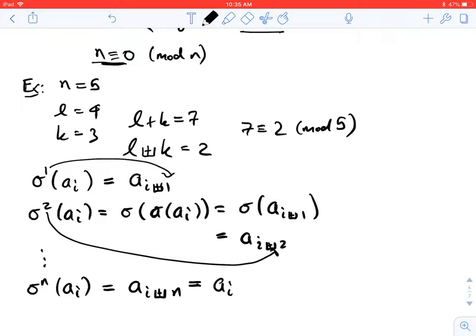So in fact, applying sigma to the n to a sub i gives us a sub i. And so sigma to the n must be the identity, right? Because this was for all i. We didn't put a restriction on it. All right. And that was our goal. Our goal was to show that if you had an n cycle, then when you applied that n cycle n times in a row, you got the identity.